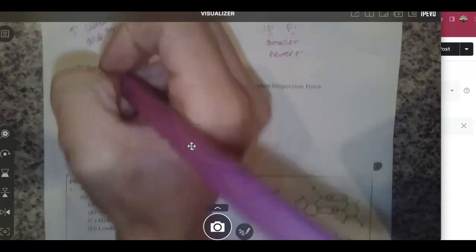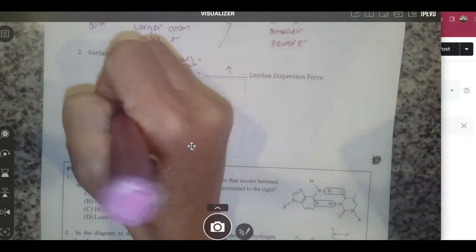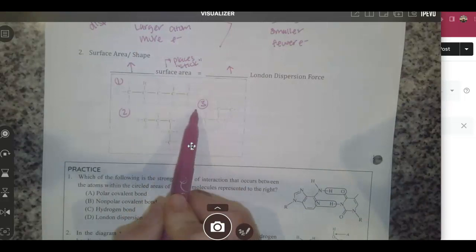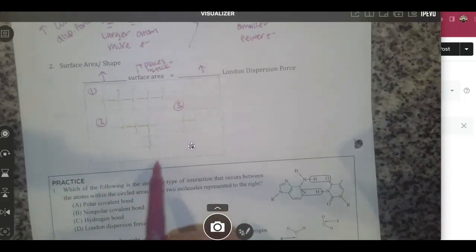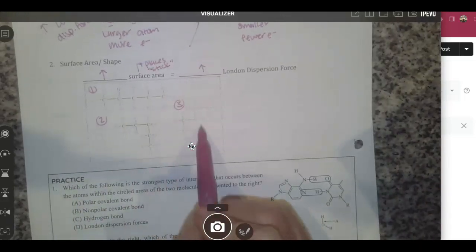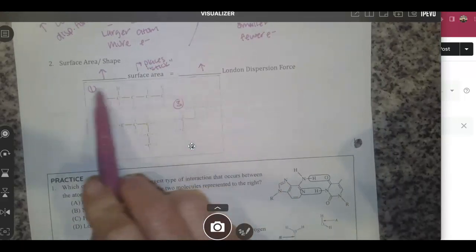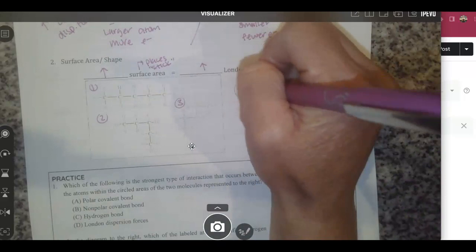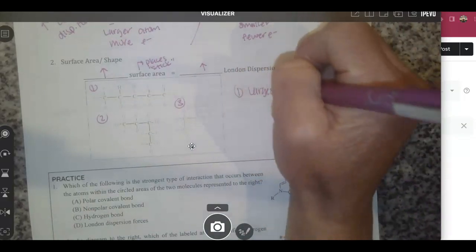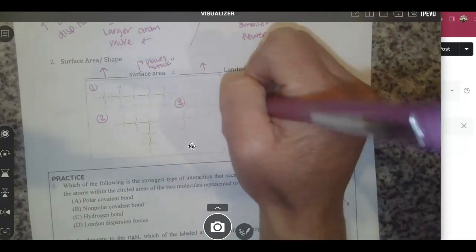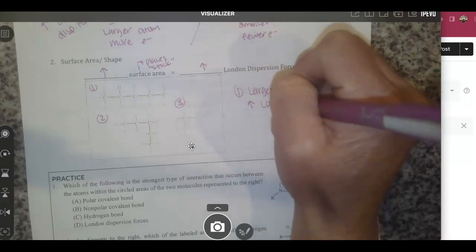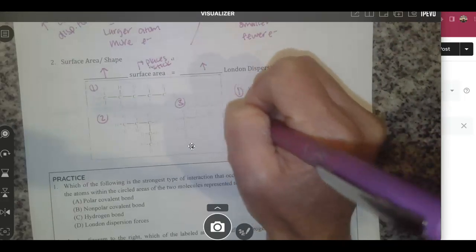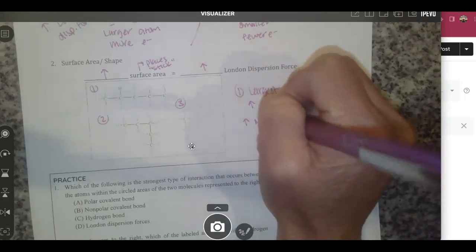If we look at these three pictures - number one, number two, and number three - if you were to measure out the perimeter of all of them, you could determine the surface area. One definitely has the biggest surface area. Therefore, it's going to have the largest London dispersion force and the highest melting point and boiling point.